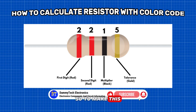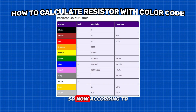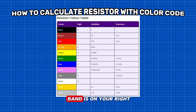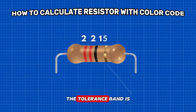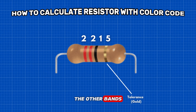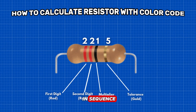To make this much easier to understand, this is the resistor color table. Now, according to this table, how do you read the resistor color code? To read them, hold the resistor such that the tolerance band is on your right. The tolerance band is usually gold or silver in color and is placed a little further away from the other bands. Starting from your left, note down all the colors of the bands and write them down in sequence.